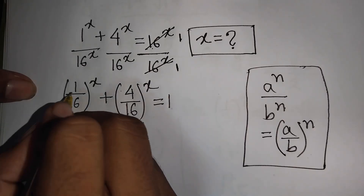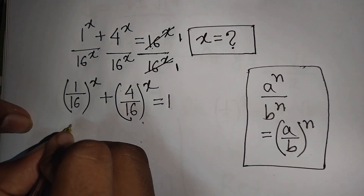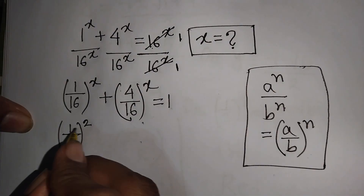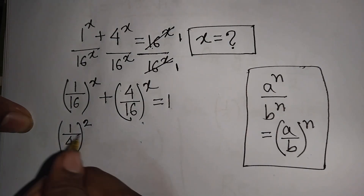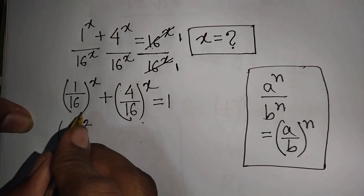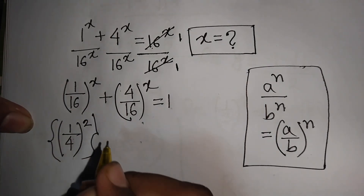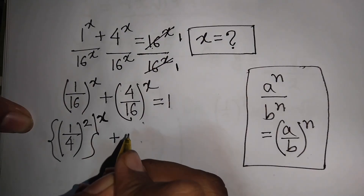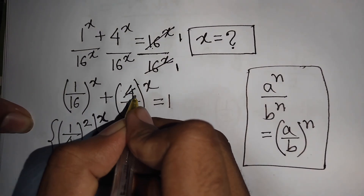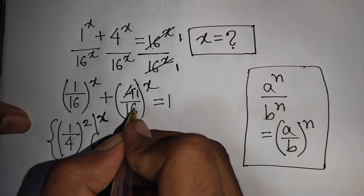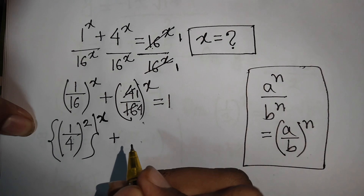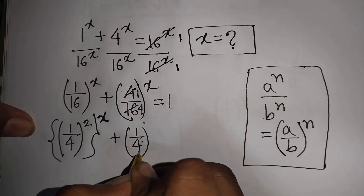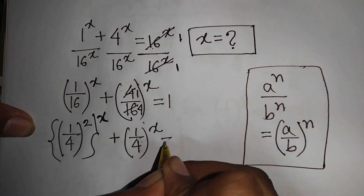Now 1/16 can be written as (1/4) to the power of 2, since 1 squared is 1 and (1/4) squared is 1/16. So the first bracket can be written as the second bracket to the power of x, giving us (1/4)^(2x) + (1/4)^x = 1.